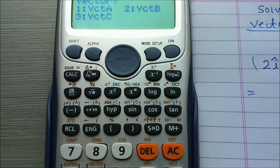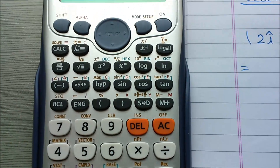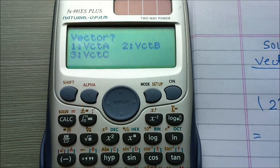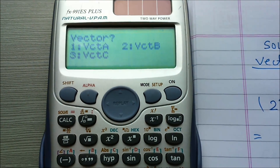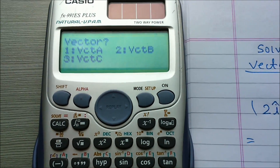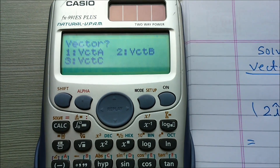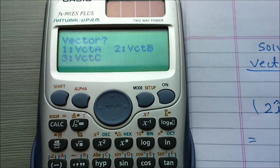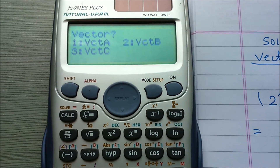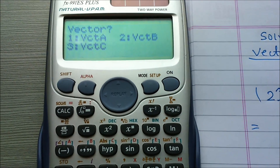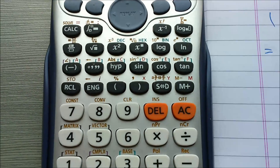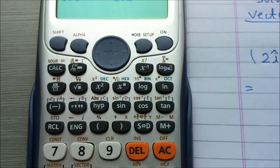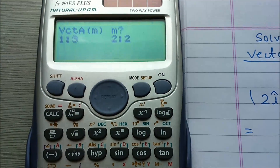When we press 8, the menu shows Vector 1 is Vector A, 2 is Vector B, and 3 is Vector C. Select any one of them. Let us select 1 for Vector A. Vector A is now selected.